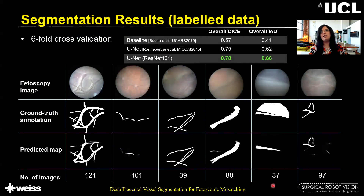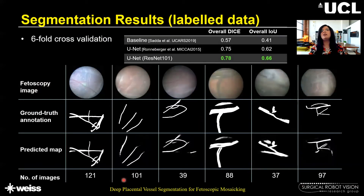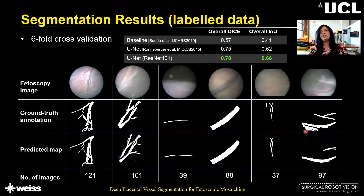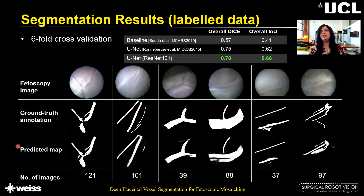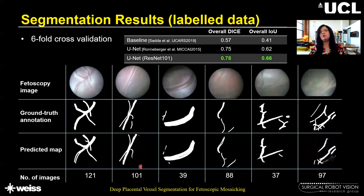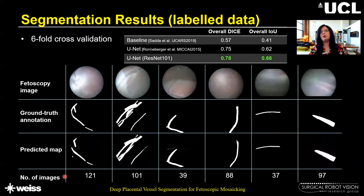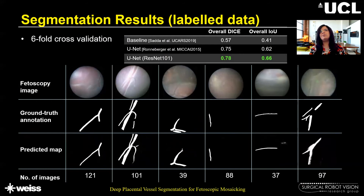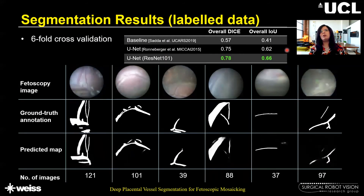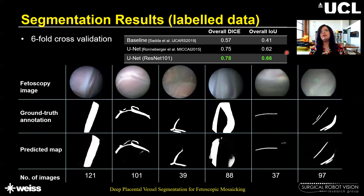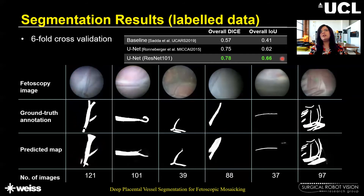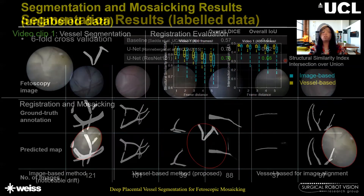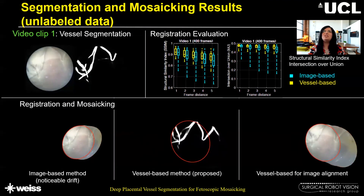For segmentation, we perform six-fold cross validation using the 483 annotated images. The ground truth annotations are shown here for the six in vivo videos, while the predicted maps from the ResNet-101 network are shown here. We perform comparison with an existing baseline method and with vanilla U-Net, and found that U-Net with ResNet-101 backbone performed significantly better than these other methods.